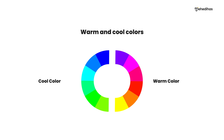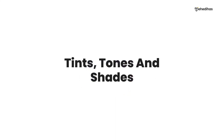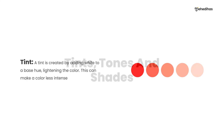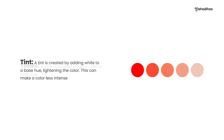Now we will see the last concepts in this episode: Tint, Tone, and Shade. A Tint is created by adding white to a base hue, lightening the color and making it less intense. So when you take a pure color (hue) and mix white with it, you get a Tint.